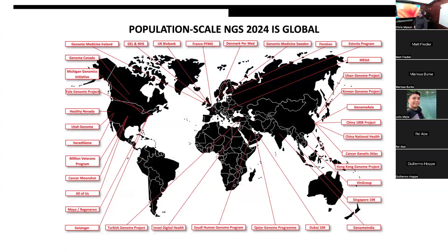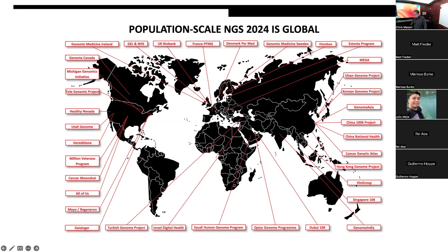Population-scale NGS sequencing is now a global enterprise — a lot of countries have some version of a genome program trying to embed it into their healthcare systems. One of my favorites is the Estonia Genome Project, where they announced that everyone in the country would get their genome sequence embedded in their medical system. The next day at the same meeting, the UK Biobank announced they were going to reach an even bigger number, and the Estonian director was very sad. But it's exciting to have entire populations receive genome-guided medicine.